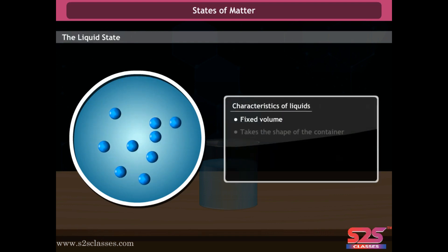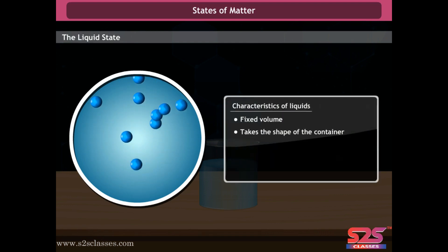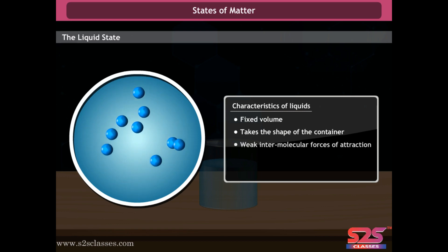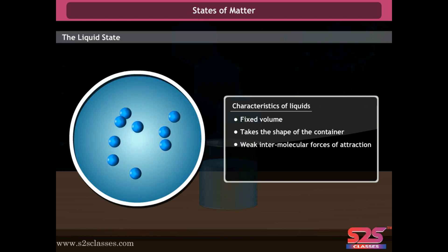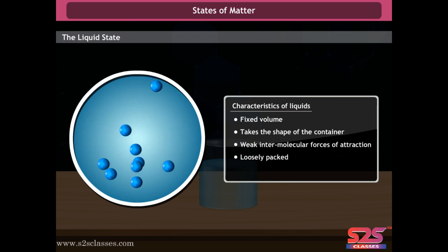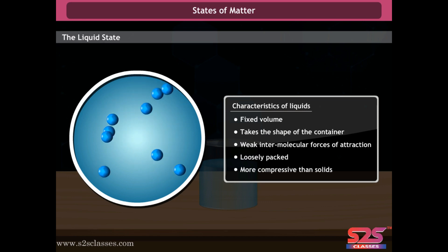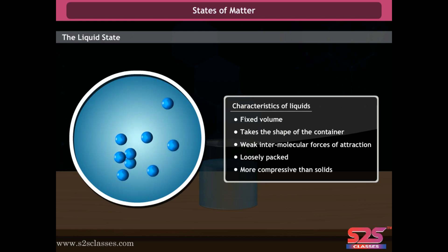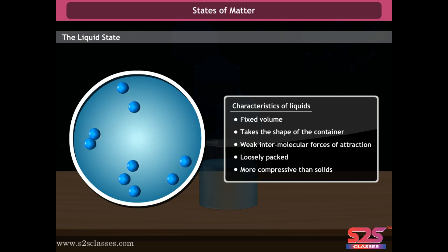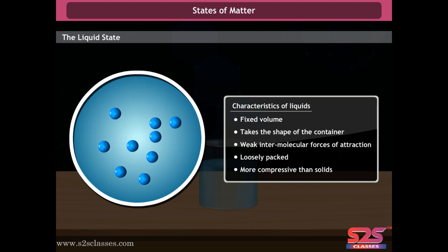Characteristics of liquids: liquids have a fixed volume, take the shape of the container in which they are kept, have a weak intermolecular force of attraction, loose packing, and are more compressible than solids. The characteristics of liquids can be understood better with the help of an activity.